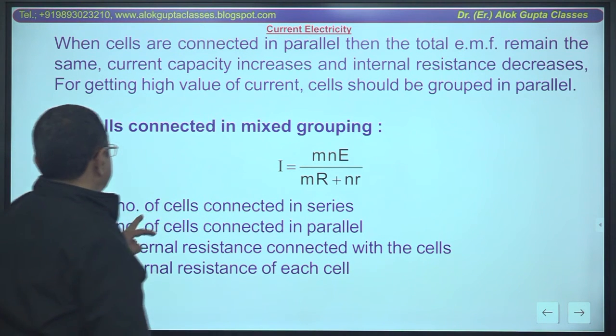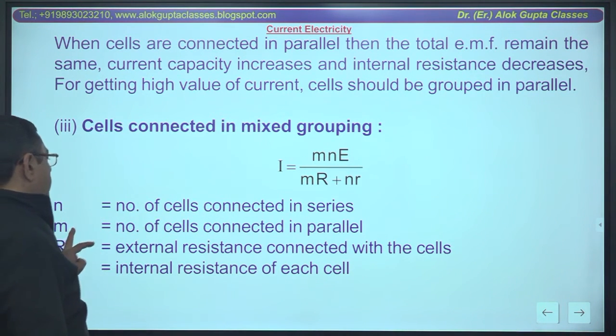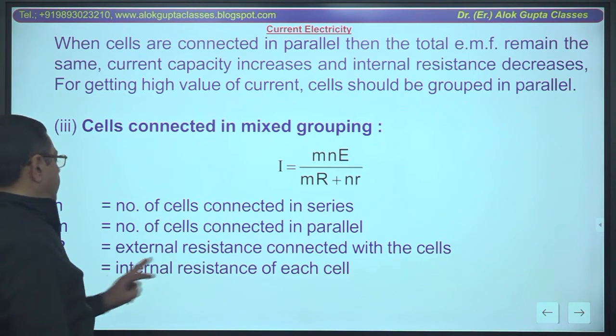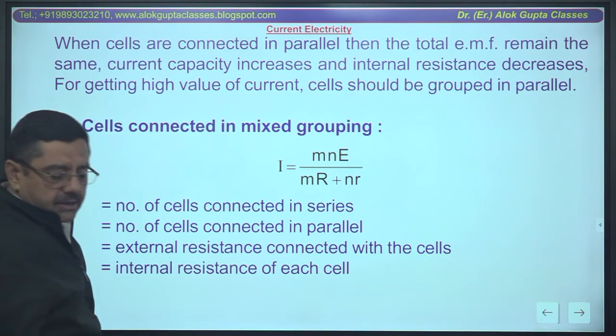n equals number of cells connected in series, m equals number of cells connected in parallel, R equals external resistance connected with the cells, small r equals internal resistance of each cell.